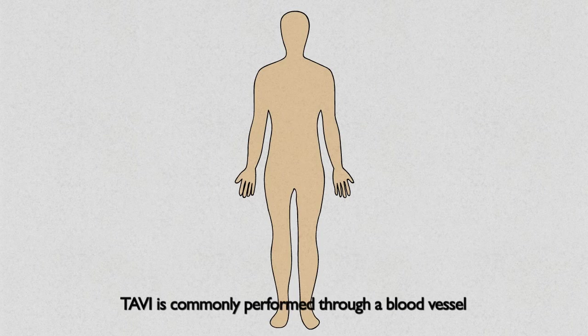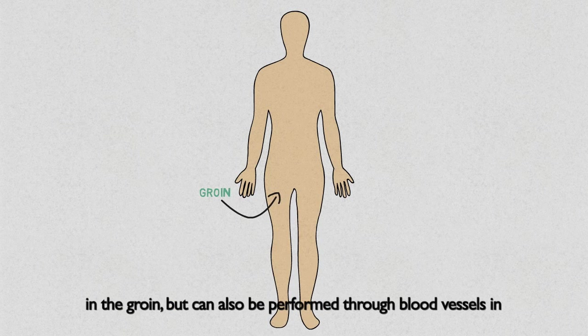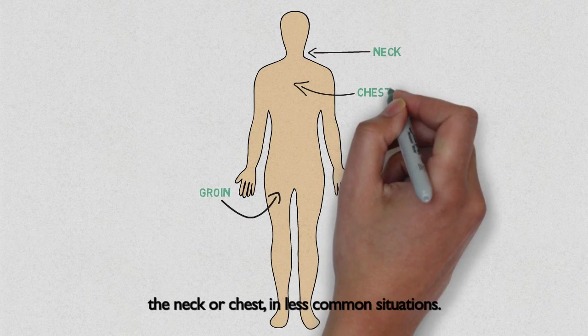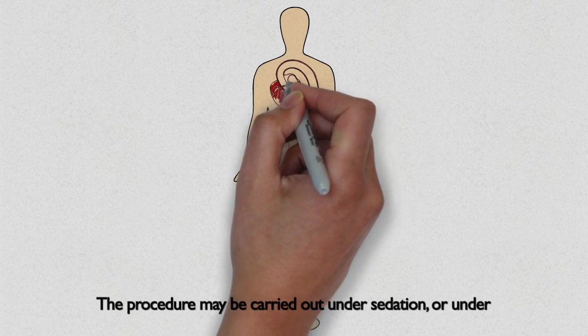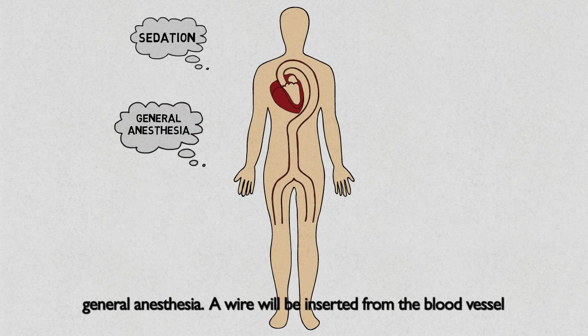TAVI is commonly performed through a blood vessel in the groin, but can also be performed through blood vessels in the neck or chest in less common situations. The procedure may be carried out under sedation or under general anesthesia.